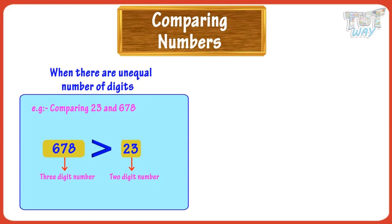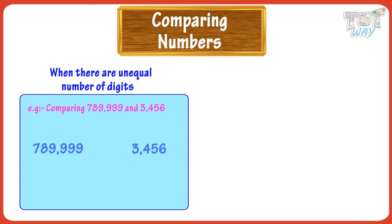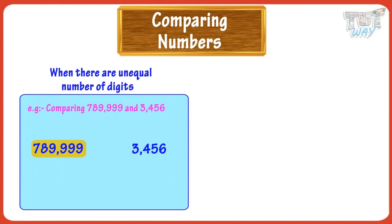Here is another example. We have two numbers with a different number of digits — this is a four-digit number and this is a six-digit number. So we need not compare the numbers further. Simply, the number with more digits is bigger.